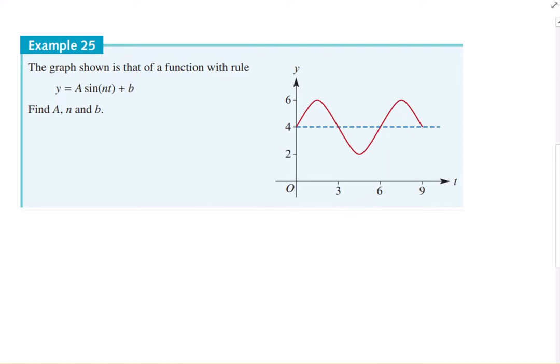All right. A similar sort of question in this next one. This time you've got a vertical translation as well though. So pretty easily you can see where you've got y equals a sin nt plus b. The b is the vertical translation. So b equals how far the middle is shifted up. So b is equal to 4.